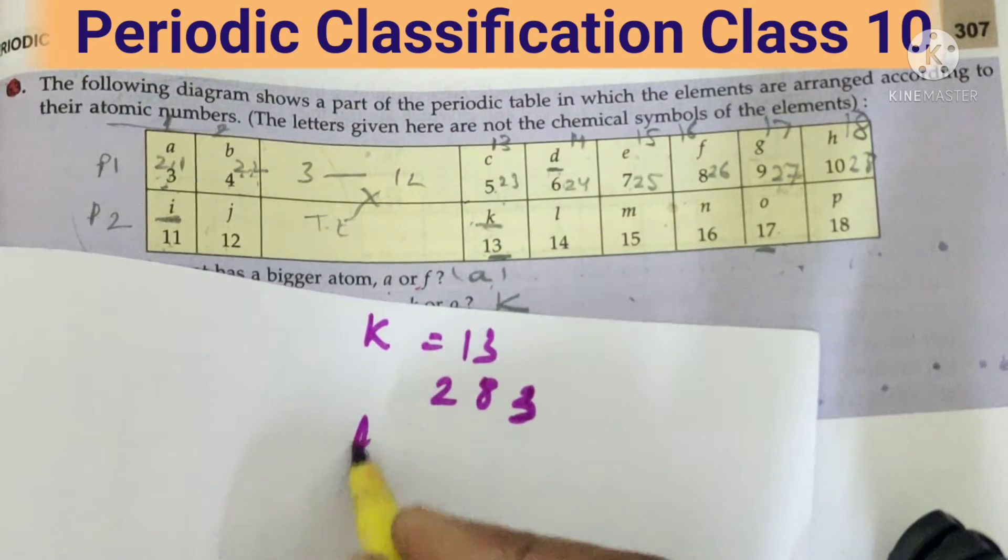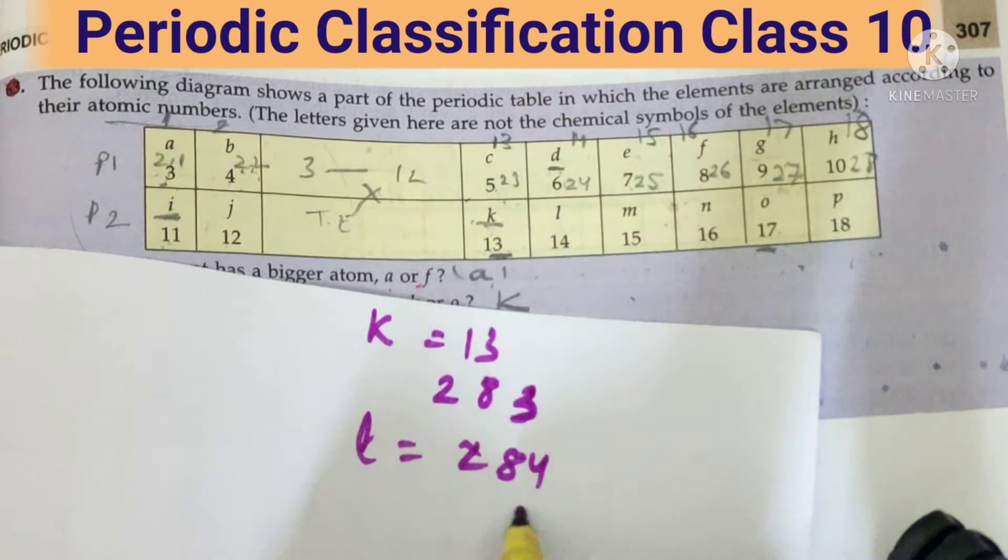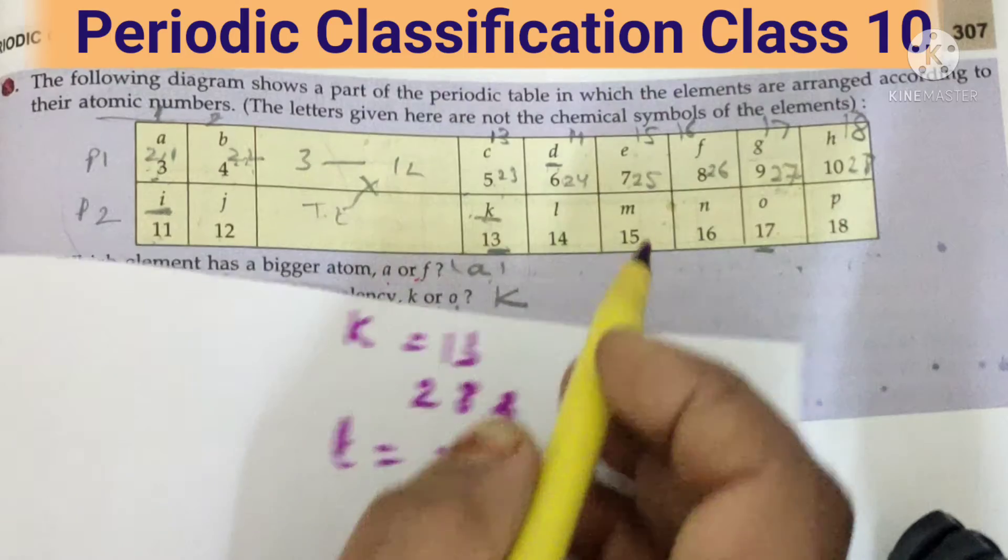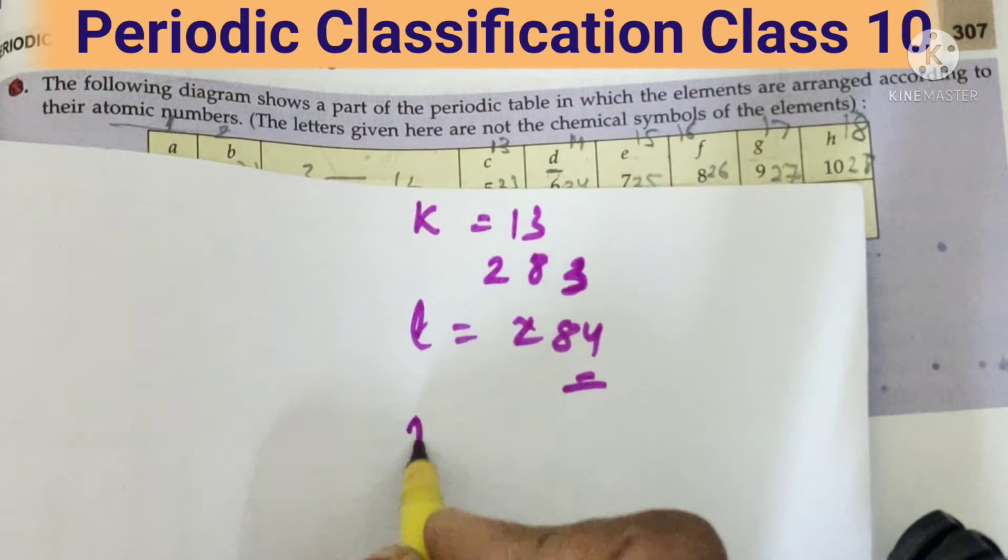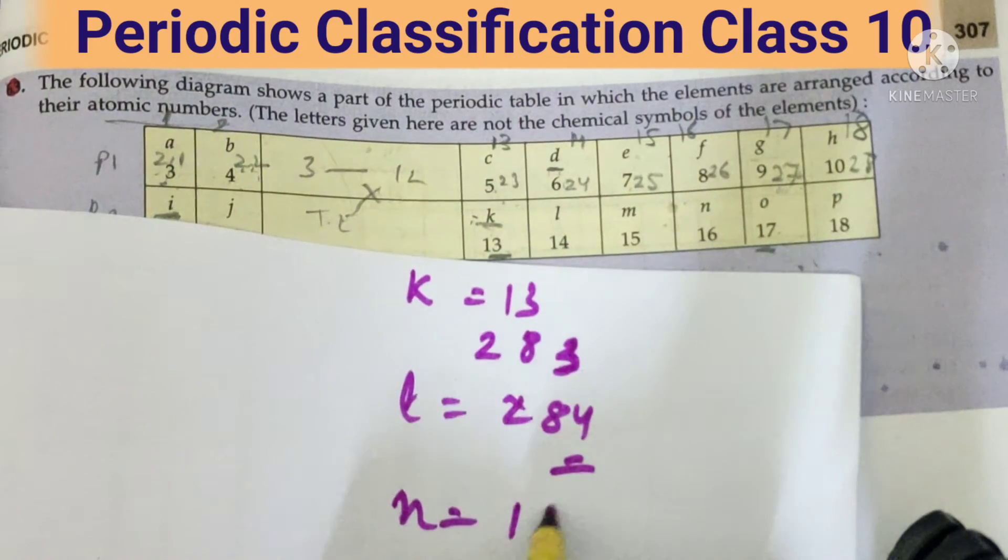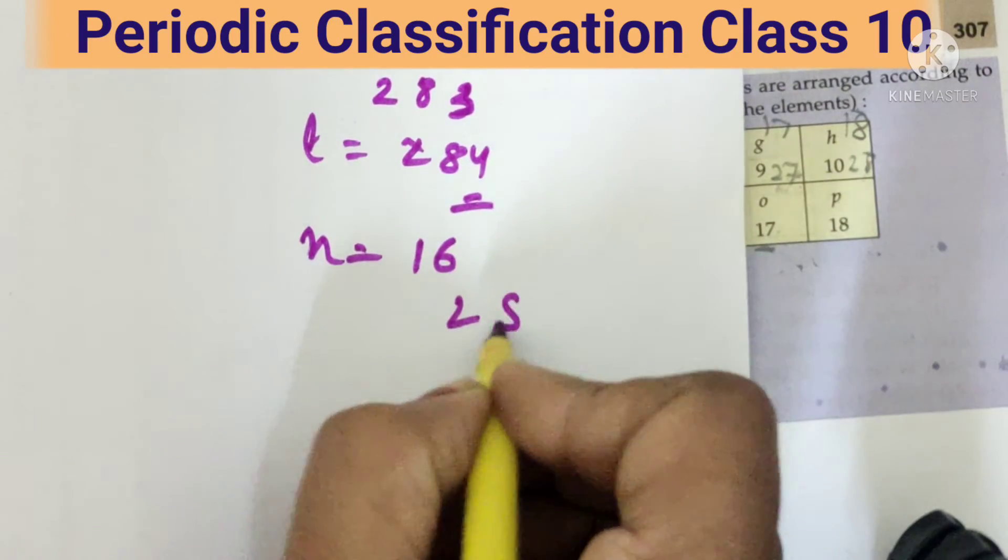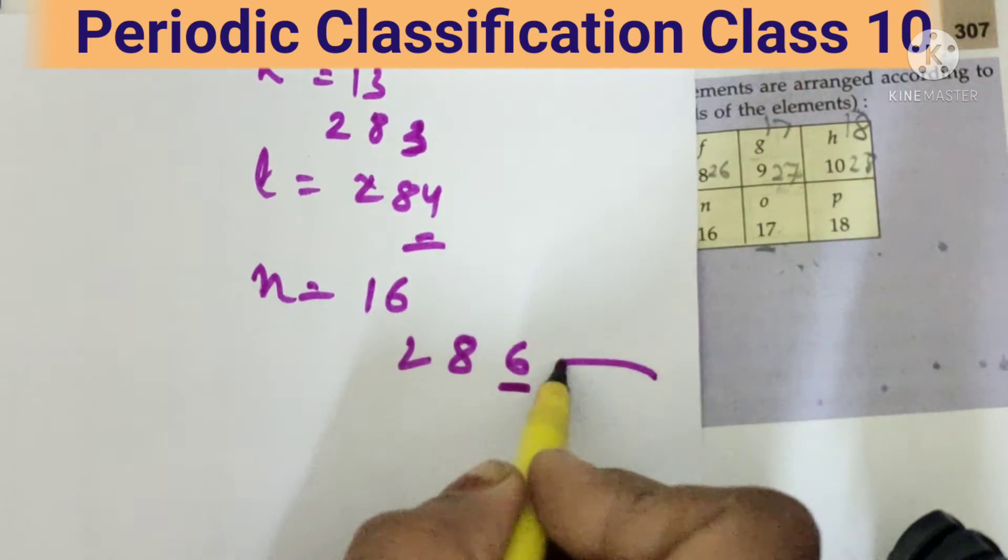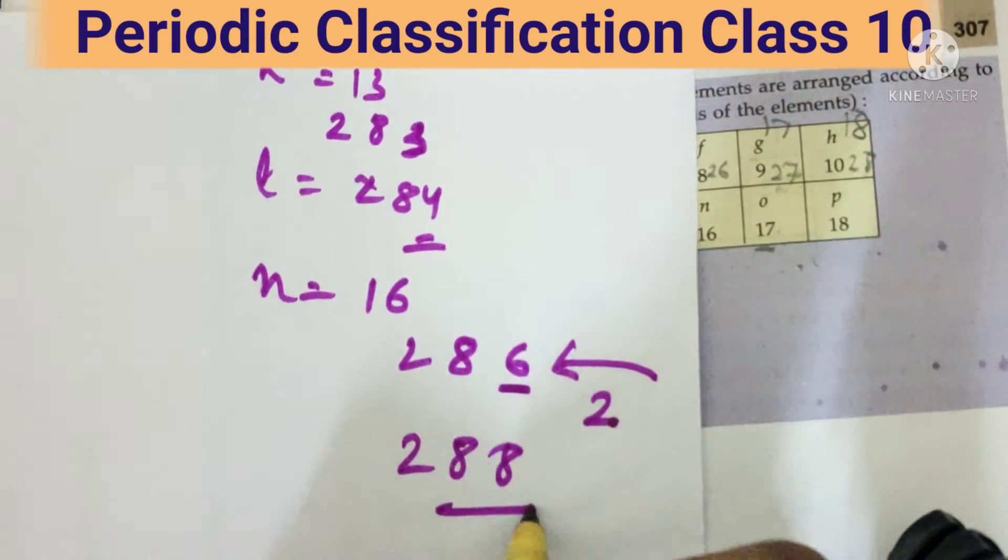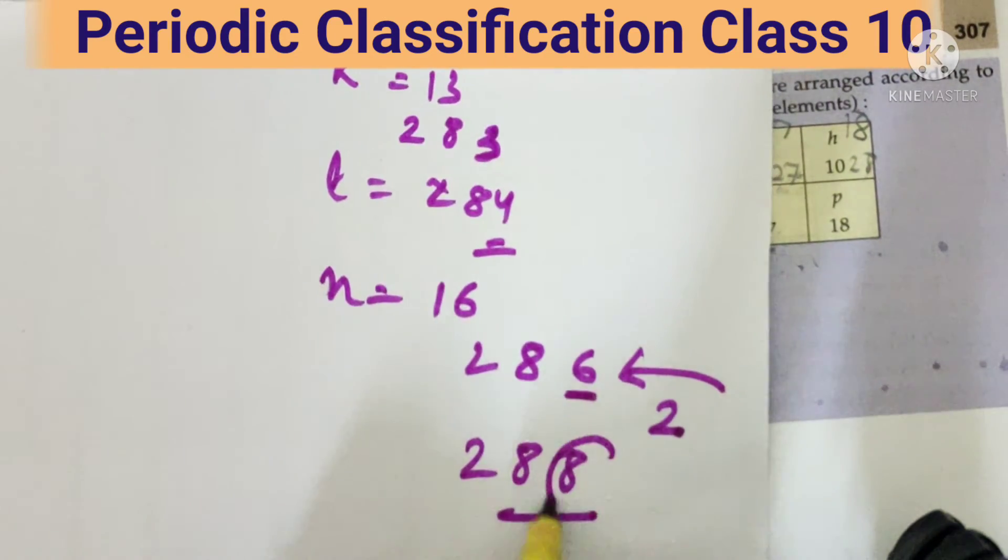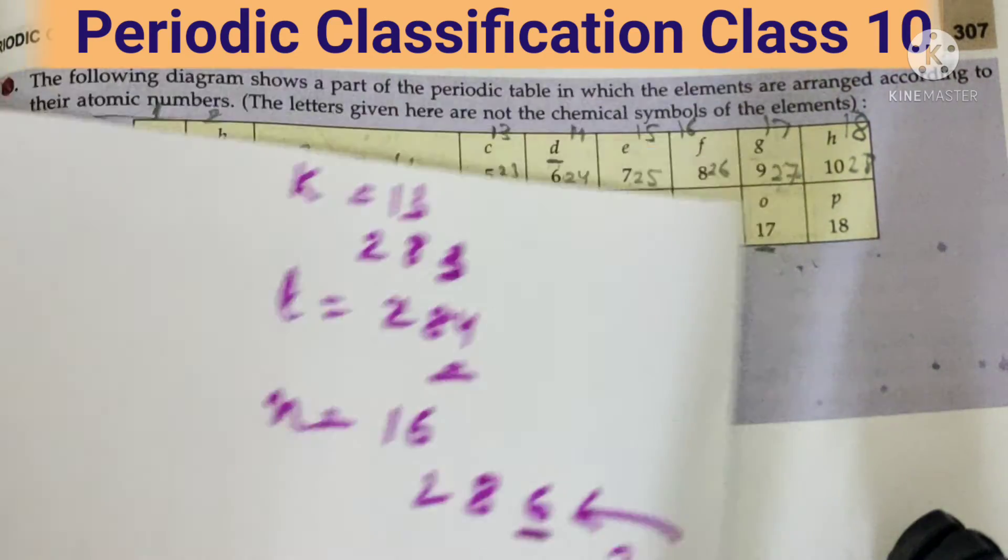Last one has two, that means it will accept two. Come to N. N is sixteen, that means two eight six. That means if it accepts two, then it becomes two eight eight. Octet is complete. That means my correct answer is this group.